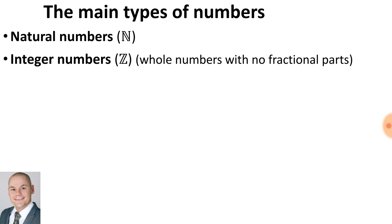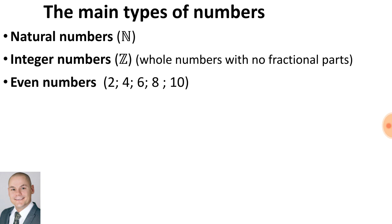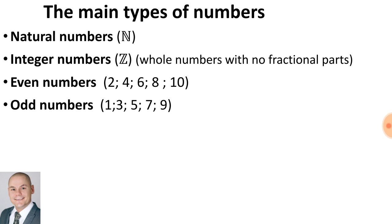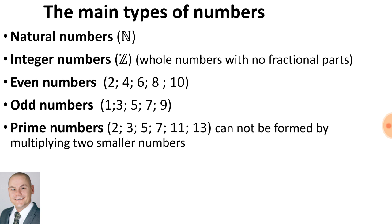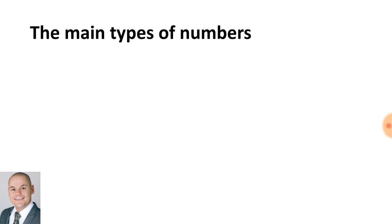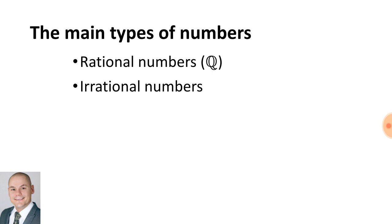We get natural numbers, integral numbers, even numbers such as 2, 4, 6, 8 and 10, and odd numbers such as 1, 3, 5, 7 and 9. Prime numbers such as 2, 3, 5, 7, 11 and 13, which cannot be formed by multiplying two smaller numbers. We also get rational numbers, irrational numbers, and real numbers.